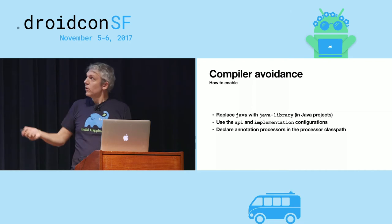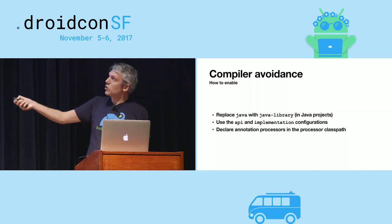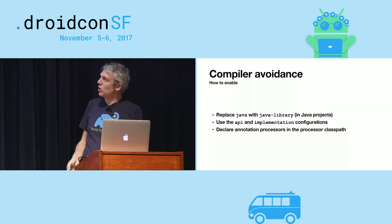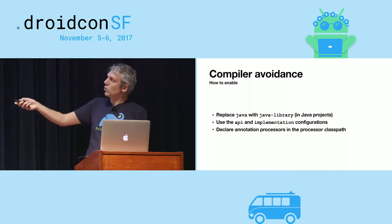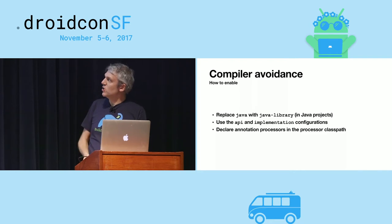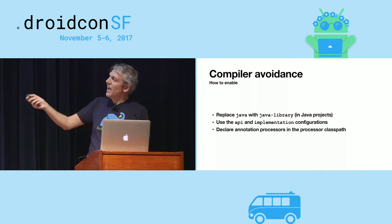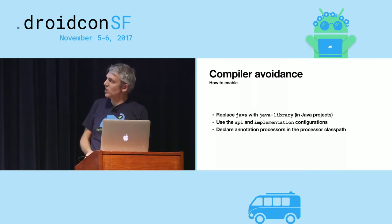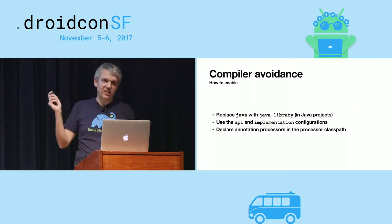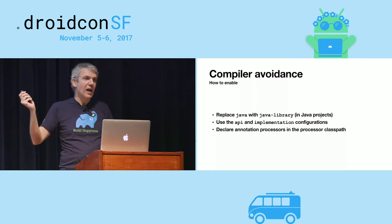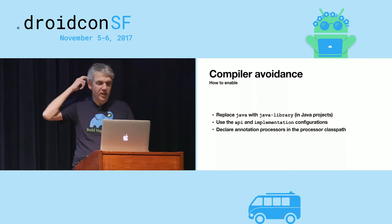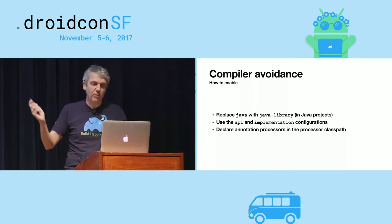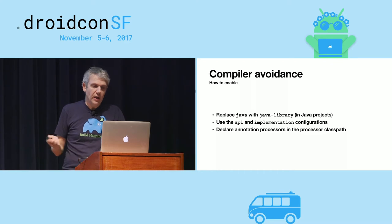For Java projects, use the Java library plugin, then use the API and implementation configurations, and declare annotation processors properly in a processor class path. This is a very powerful feature.